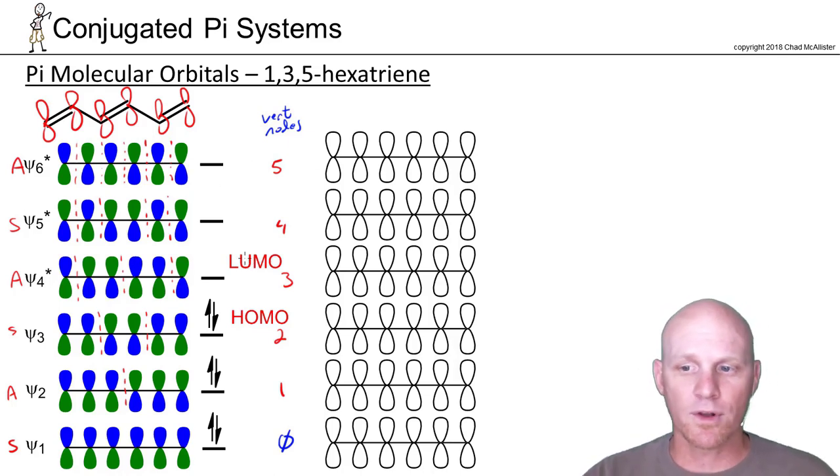And again, you could be expected to draw an orbital in this. You might say, draw the HOMO or something like that for 1,3,5 hexatriene, and you'd be like, okay, 6 pi electrons, that means psi 3 would be the HOMO, which means it should be symmetric and have two nodes. And being symmetric and two nodes, then you'll figure out how to construct it. So that's kind of the approach we're going to take here.